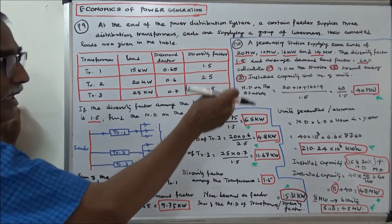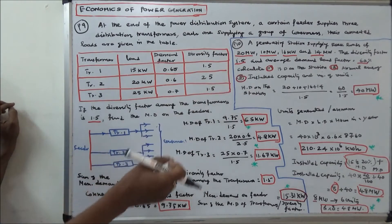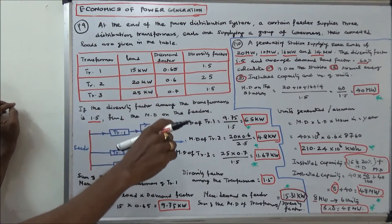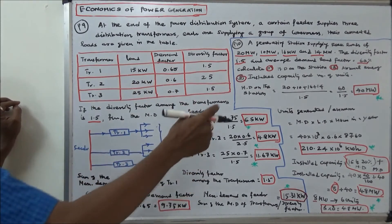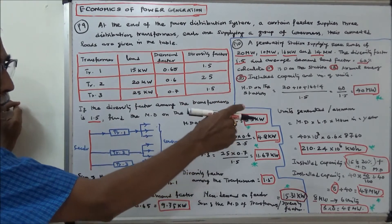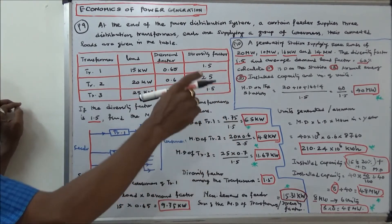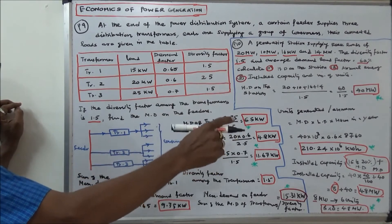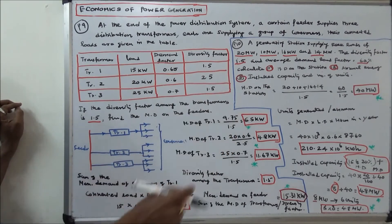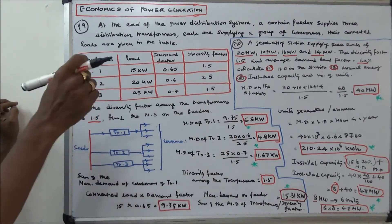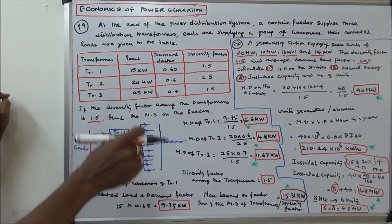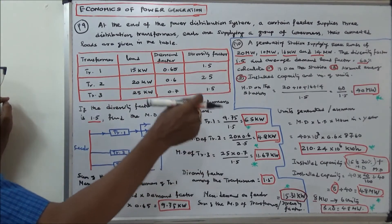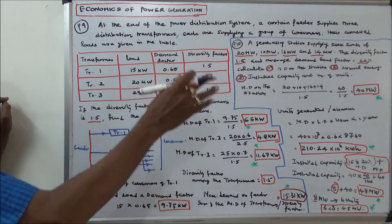Number two: units generated per annum equals maximum demand multiplied by load factor multiplied by hours in a year. Maximum demand is 40 megawatts, load factor is 0.6, and hours in a year is 8760. The units generated per annum by the generating station is 210.24 × 10⁶ kilowatt-hours.